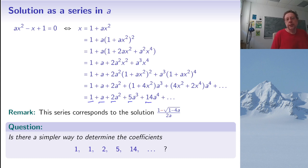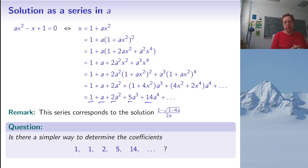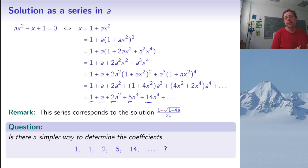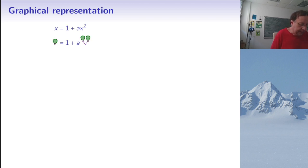The sequence is definitely not the Fibonacci sequence. One thing you can do is consult the Online Encyclopedia of Integer Sequences, OEIS, giving it the numbers one, one, two, five, fourteen to find known sequences that begin this way. But let's not do that just yet — instead, I want to use a graphical representation for the equation.